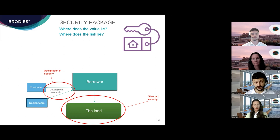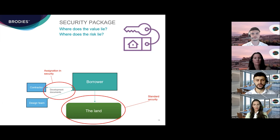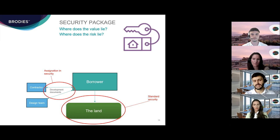Development documents are likely to include a main build contract with the principal contractor, collateral warranties with specialist subcontractors, and appointments of the professional consultant design team such as architects. In Scotland, a fixed security over contractual rights is taken by way of a document called an assignation in security. An assignation in security is an agreement whereby the assignor — the borrower — transfers its rights under a contract to the assignee — the lender — with the proviso that once the underlying debt is repaid, the assignee will retrocess the assignation so the rights transfer back to the assignor.